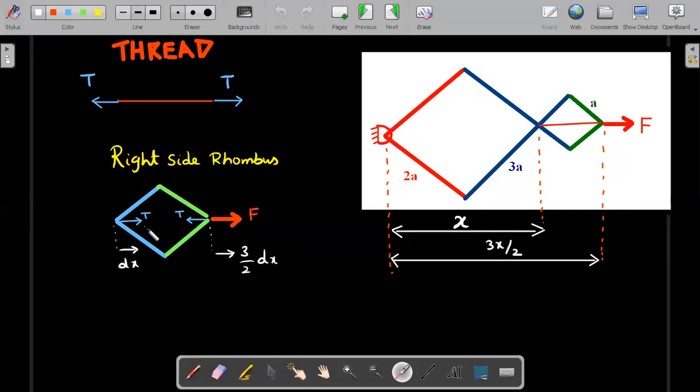why is it called virtual work method? So we will believe that there is a small displacement, microscopic one. And under the action of that particular small displacement we'll try to calculate the work. And since these displacements never happened, we'll try to say whatever work we have calculated is going to be adding up to zero.